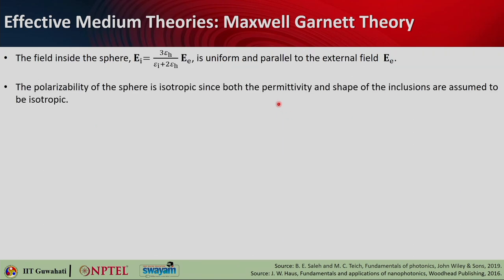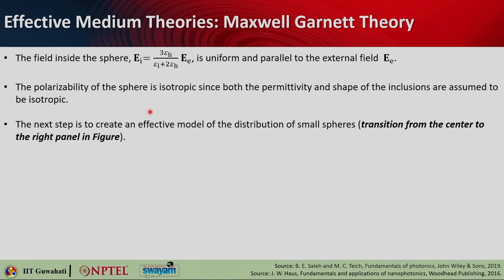From this, the electric field inside the sphere is: E_inside = 3*epsilon_H / (epsilon_I + 2*epsilon_H) * E_E, which is considered uniform and parallel to the external electric field E_E. Since both permittivity and shape are assumed to be isotropic, the polarizability of the sphere is also isotropic.